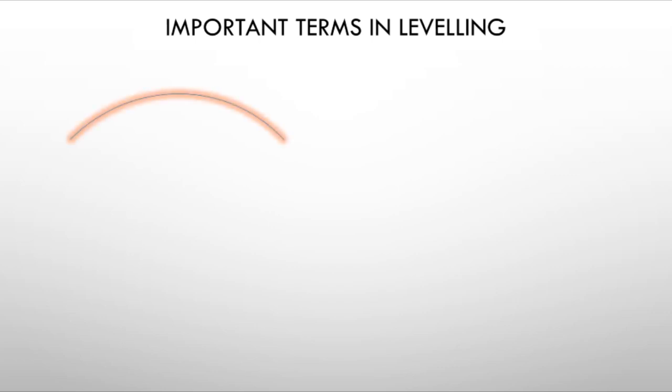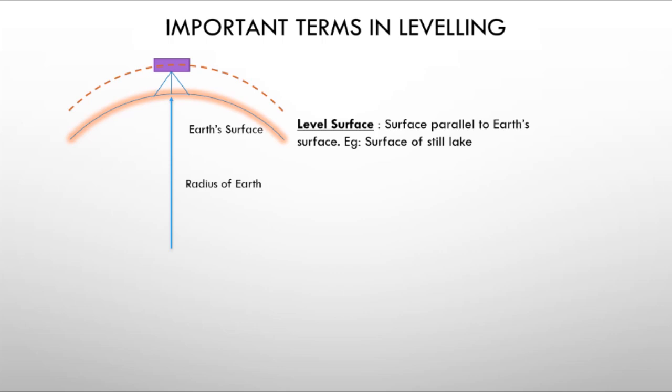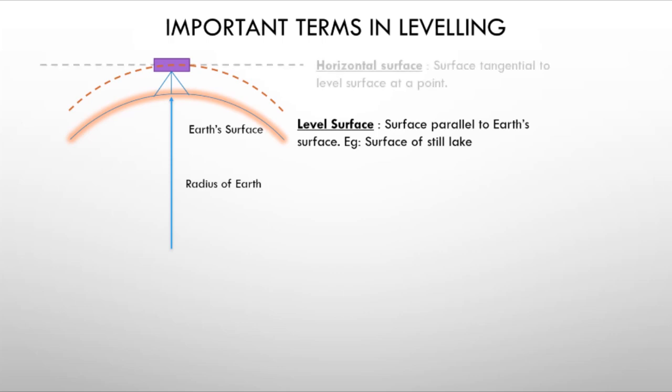First, what is a level surface? It is an imaginary surface parallel to the earth's surface — a surface to which every point is equidistant from the earth's center. The surface of a still lake is an example of a level surface. It is also called a horizontal surface.